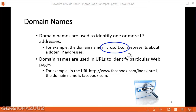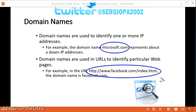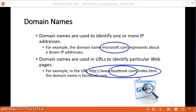Now, domain names are part of that bigger URL string of text that we use in the different browsers. For example, in this URL, you see that part of this URL string is the domain name, facebook.com, and that's the domain name in this URL. And this URL is pointing to the index website resource located at Facebook computers.